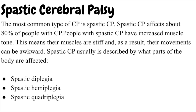Spastic CP is usually described by what parts of the body are affected. Spastic diplegia — in this type, muscle stiffness is mainly in the legs, with the arms less affected or not affected at all. People with spastic diplegia might have difficulty walking because tight hip and leg muscles cause their legs to pull together, turn inward, and cross at the knees — also known as scissoring.